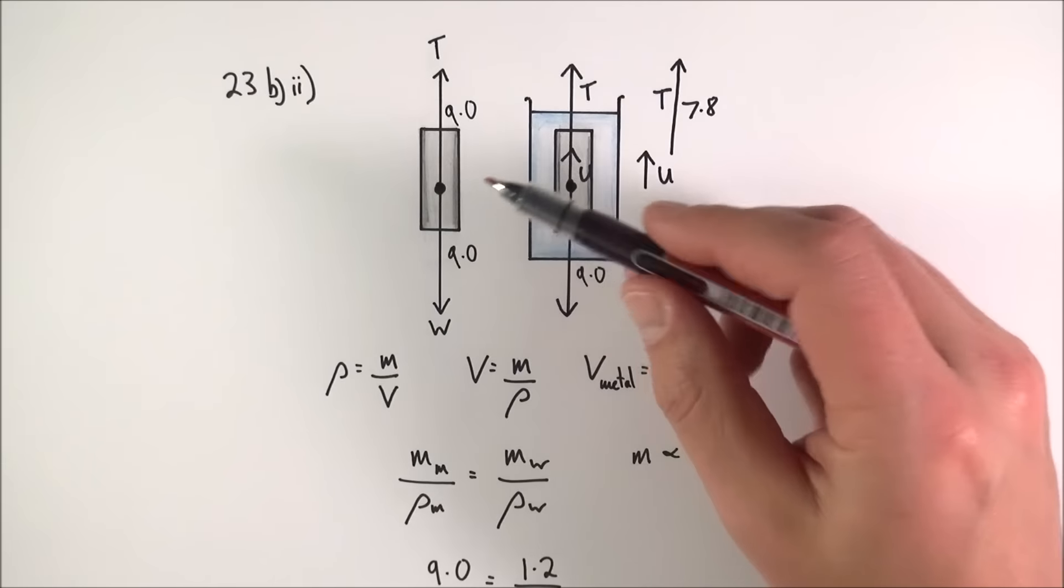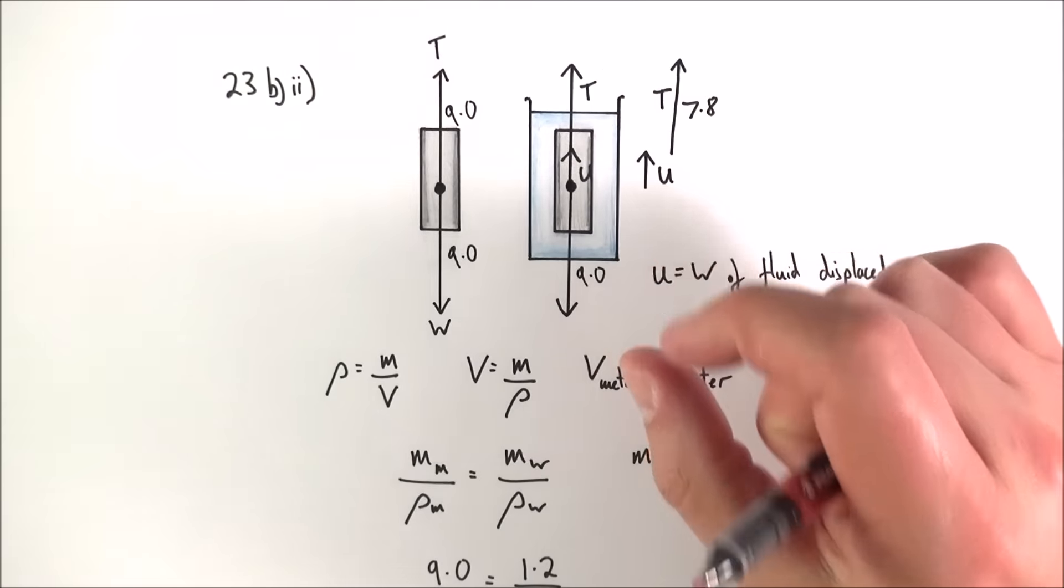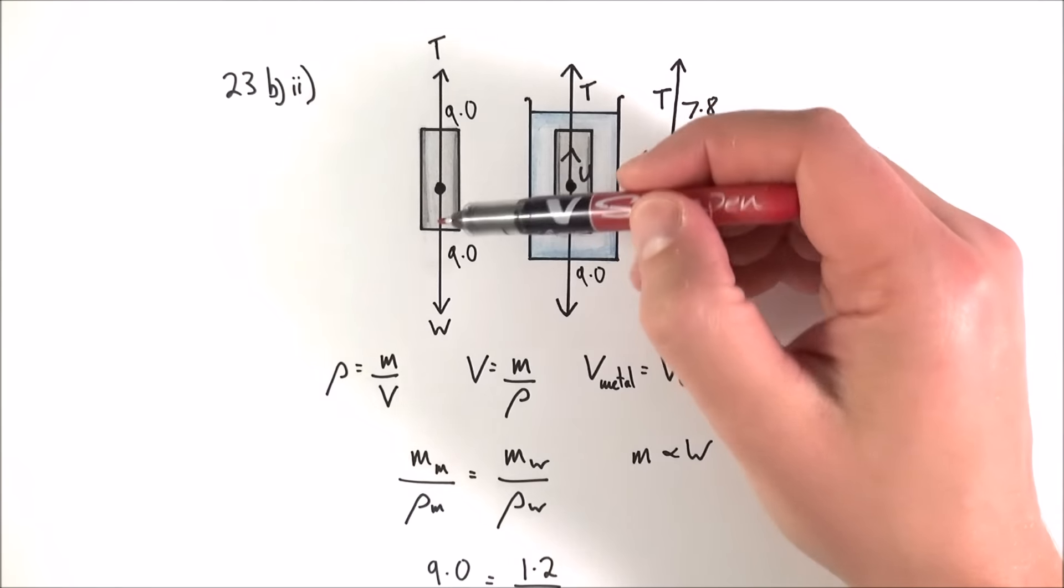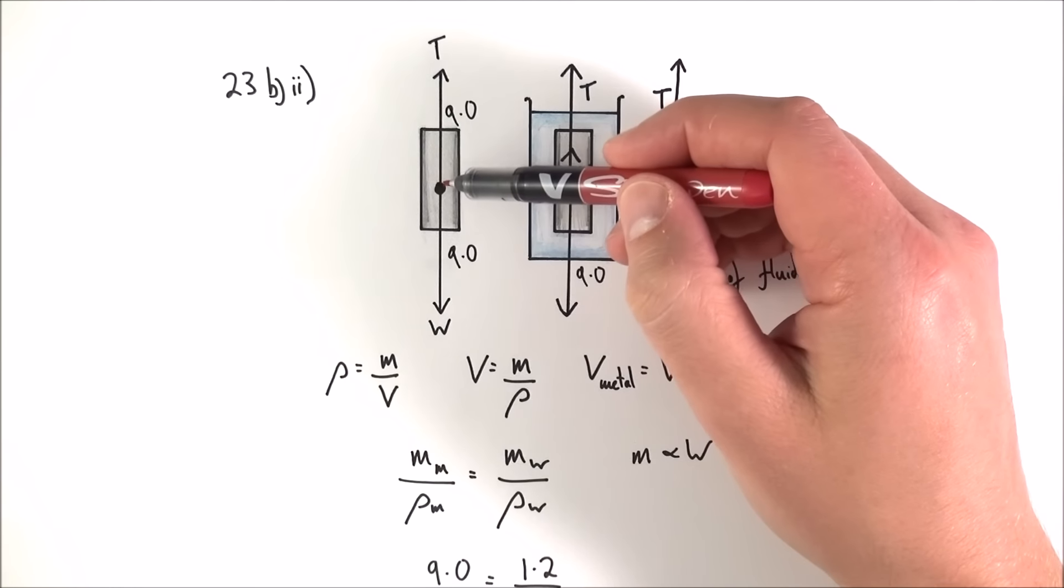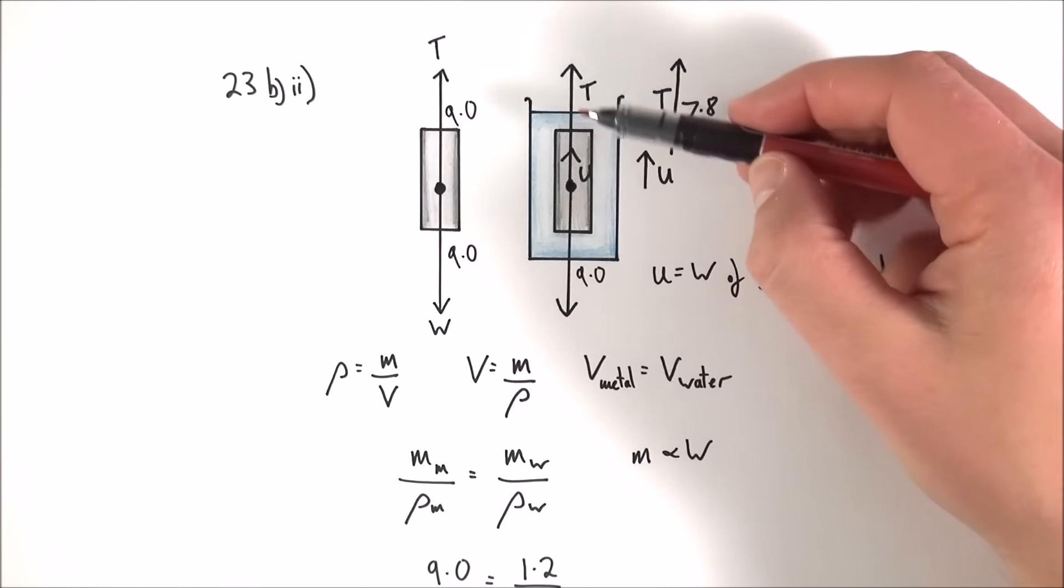So question 23b part 2 when I first saw it it wasn't an obvious way to work out the answer and talking to the teachers I teach with it wasn't a very nice question that we thought especially for the three marks available. So first of all this is the initial situation, you've got the mass which is hanging on the mass balance and the reading on the scale is 9.0 newtons.